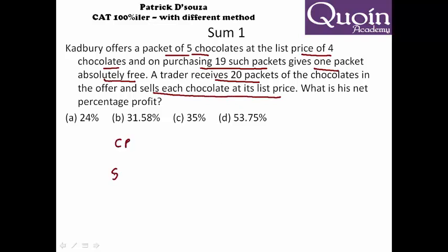Just to understand, let's assume cost price as rupees one per chocolate, which means per packet he buys for four rupees. And for nineteen packets he pays rupees seventy-six, so that becomes his cost price.